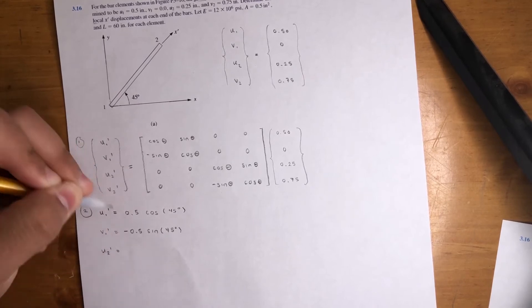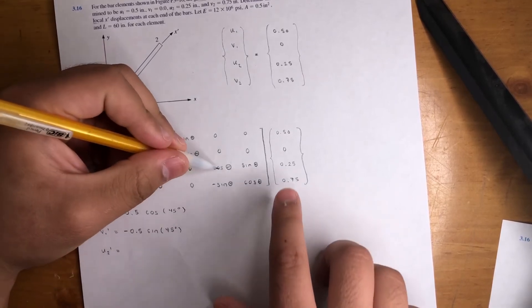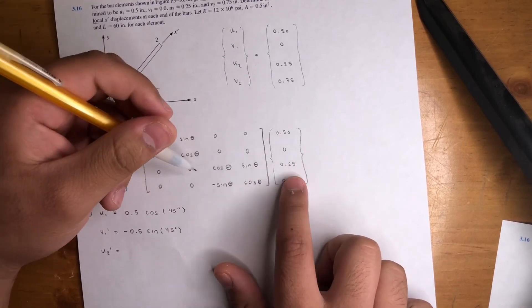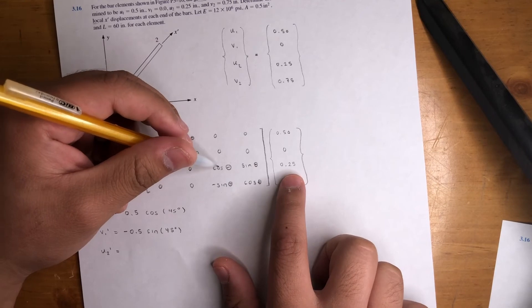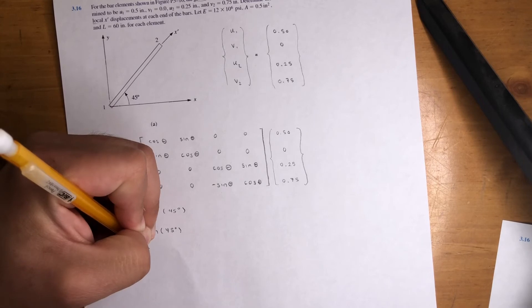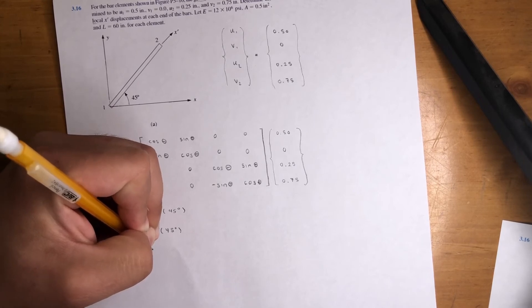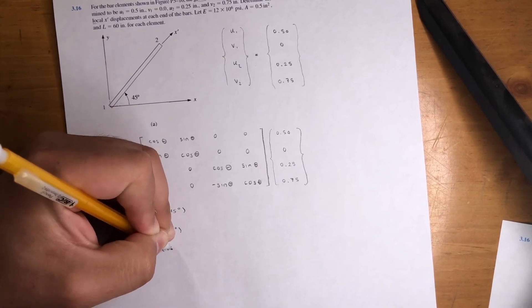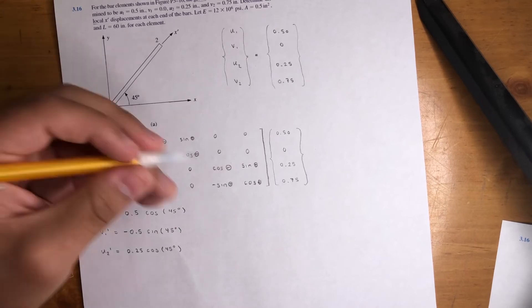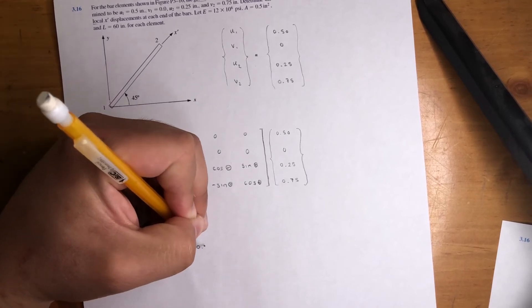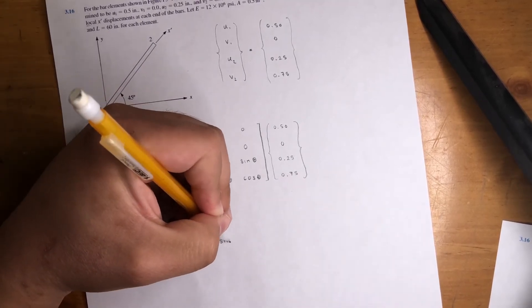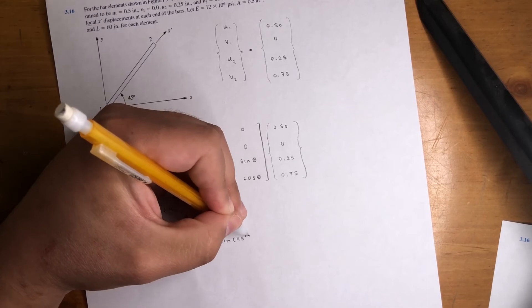U2 prime, that's going to be a little bit more complicated. We're going to have cosine theta times 0.25. So I'm assuming you know how to multiply a matrix to a vector. So cosine theta times 0.25. So 0.25 cosine of 45 degrees. And then it's plus 0.75. Now the next one, 0.75 times sine theta, which is sine 45 degrees.